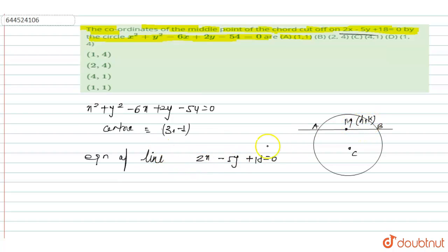Put h and k in this equation: 2h minus 5k plus 18 equals 0. Then 5k equals 2h plus 18.